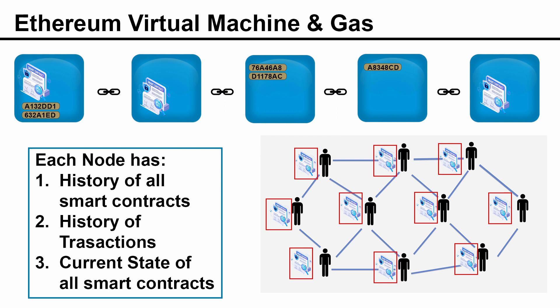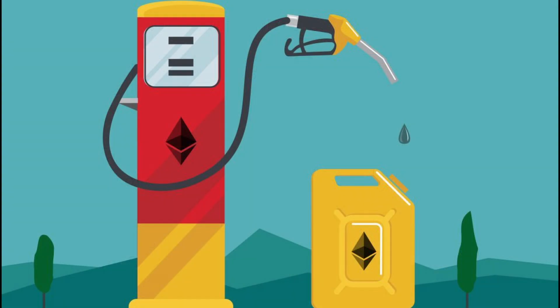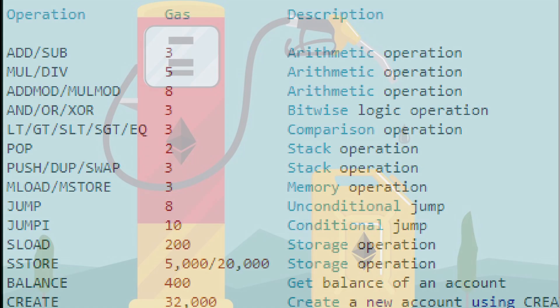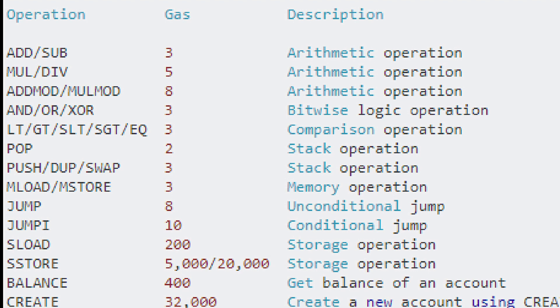Now let's look at the second problem: infinite loops or heavy computation. This is a tough problem to solve. This is where the concept of gas comes in. It's a cool solution which says any computation that runs on the blockchain needs to pay gas — like for running a car you need gas. Here, for performing any computation, you need to pay gas. Different operations and calculations cost different amounts of gas, and here is some of the list.